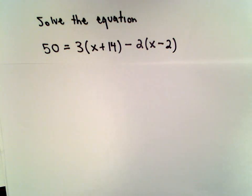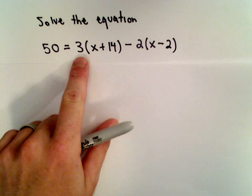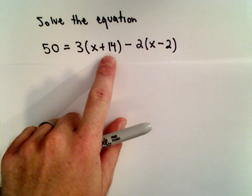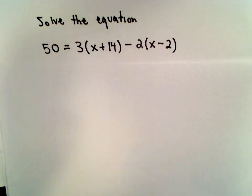Okay, in this example, we're going to solve the equation 50 equals 3 times the quantity x plus 14 minus 2 times the quantity x minus 2.